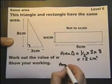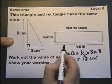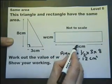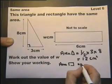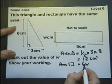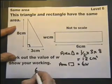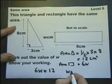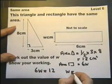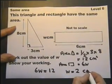Now the area of the rectangle is these two measurements multiplied together. So 6 times W is 6W. We're told the area of the triangle equals the area of the rectangle, therefore 6W equals 12. W itself must therefore be 2, 2 centimeters.